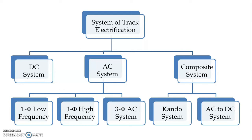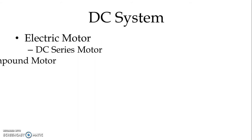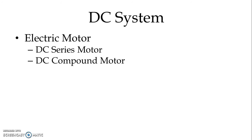This is the entire classification of currently applicable systems of track electrification. We will start with the DC system. We use DC series type of electric motor to get the motive power. Sometimes we use DC compound motor also for tramways.